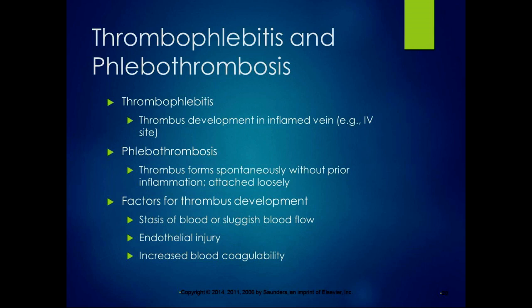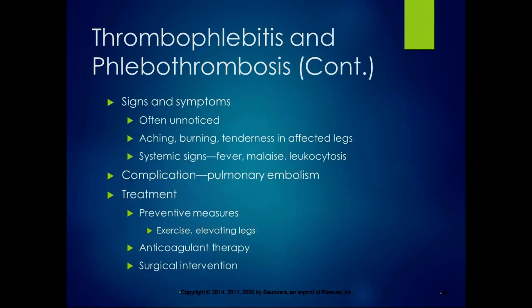Increased blood coagulability — if your blood is thicker or the blood flow is sluggish, you are more likely to form a clot. That's when they use blood thinners to help prevent that clot formation. A lot of times these go unnoticed; there might be symptoms that are easily ignored like fever, malaise, or leukocytosis — you're not going to know unless you get a blood test.